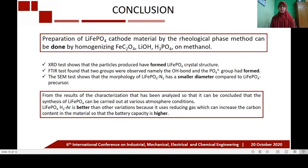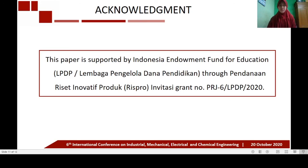In conclusion, preparation of lithium iron phosphate cathode material by the rheological phase method can be done by homogenizing iron oxalate, lithium hydroxide, phosphoric acid, and methanol. XRD tests show that the particles produced had formed a lithium iron phosphate crystal structure. FTIR tests confirmed that the hydroxide bond and the phosphate group had formed. SEM tests show that the morphology of lithium iron phosphate nitrogen has a smaller diameter compared to the lithium iron phosphate precursor. Lithium iron phosphate hydrogen-argon performs better than other variations because the reducing gas increases the carbon content, resulting in higher battery capacity.